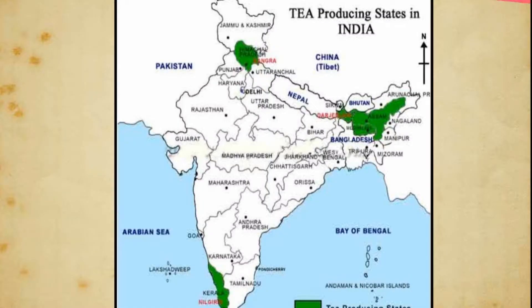In India, tea is produced in Assam, West Bengal, Kerala and Tamil Nadu. Assam alone accounts for half of the tea produced in the country.